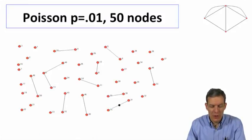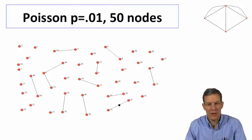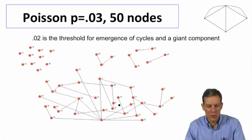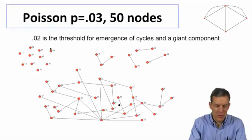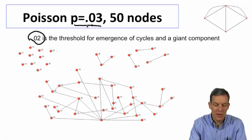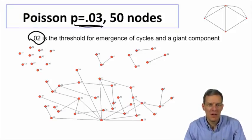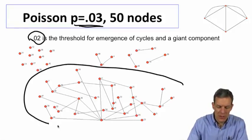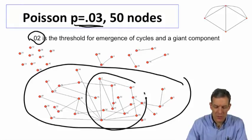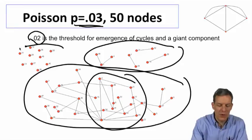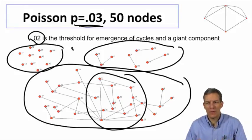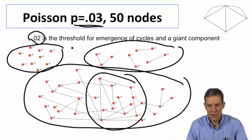Here I started with fairly low p and 50 nodes. We begin to see there's not much — the nodes are fairly separate, a lot of isolates, a few links here and there. Once we hit the threshold for the emergence of cycles in a giant component — that's 0.02 in this particular case — and we get to p = 0.03, so now everybody has an expectation of about 1.5 friends, we begin to see this giant component emerging and some cycles. We're still at a point where things aren't completely connected, but we start to see a giant component.